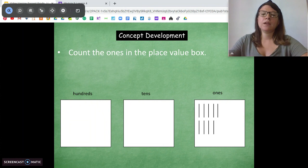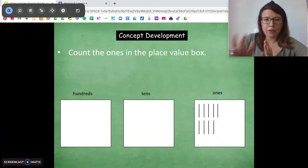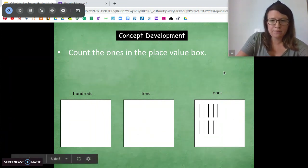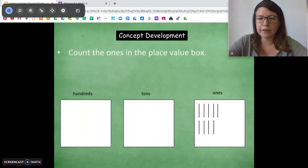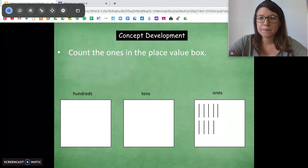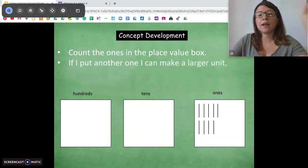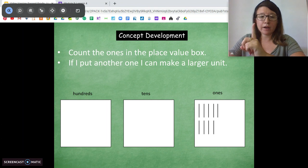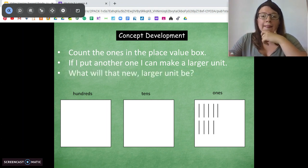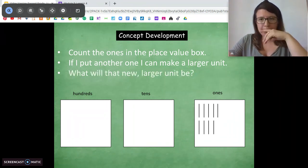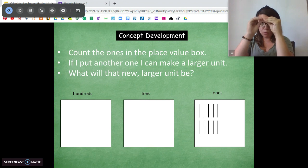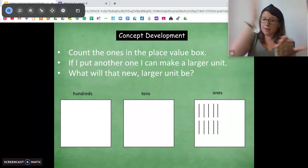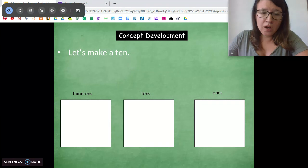How many ones are there in the place value box right here? Nine. Very good. Now, if I put another one into that box, what larger unit will that make? Good. It'll make a 10 stick. So we can group all those ones together, because there are 10 of them, and move them over and make one 10 stick. Awesome.